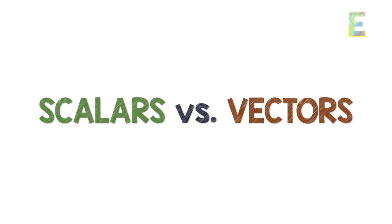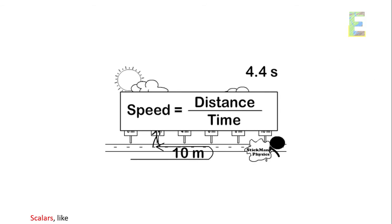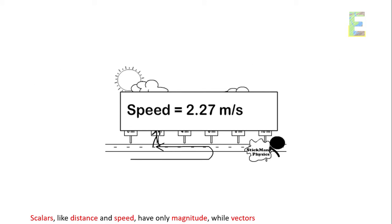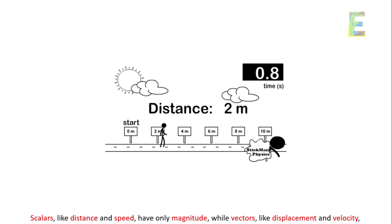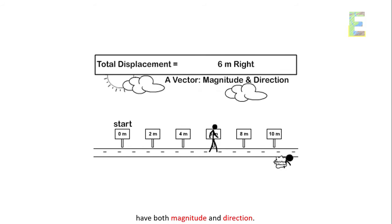Scalars versus vectors. In physics, we use scalars and vectors to describe motion. Scalars, like distance and speed, have only magnitude, while vectors, like displacement and velocity, have both magnitude and direction.